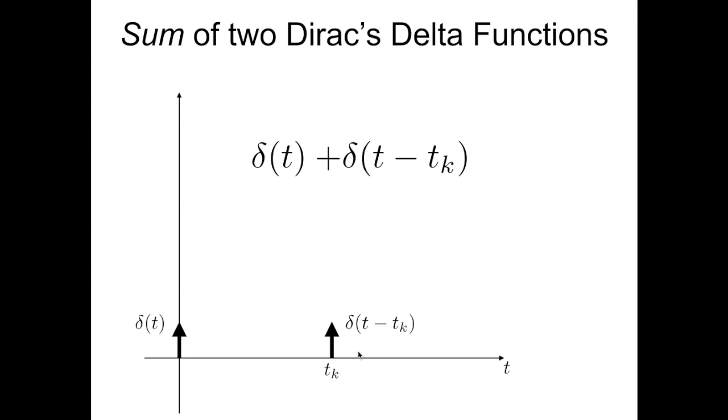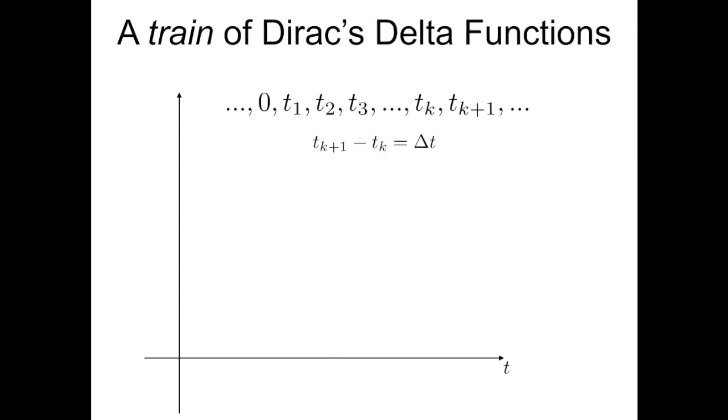Let me go, instead of summing two Dirac delta functions, to summing a larger number - what I call a train of Dirac delta functions. I'm considering the horizontal axis, the axis of t. Say these represent times, and I'm thinking of a set of infinite points.